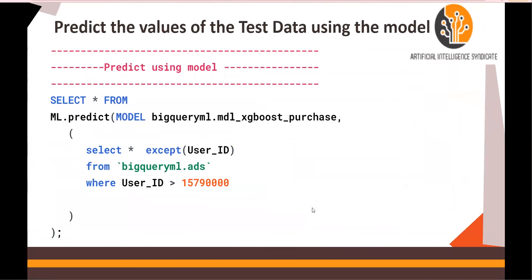We are then going to use the model for prediction on the unseen validation dataset. During training we used records where user ID was less than a certain number; now we are using records greater than that number. This is my method of splitting data for training and testing purposes. For predictions, I'm going to use SELECT * FROM ml.predict with the name of the model.